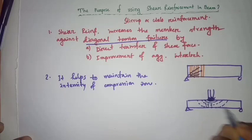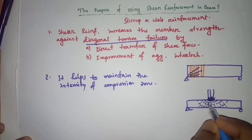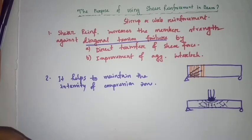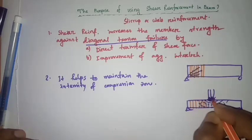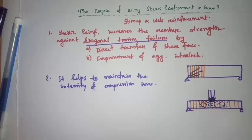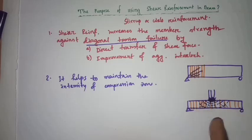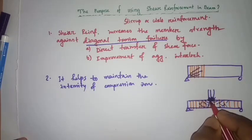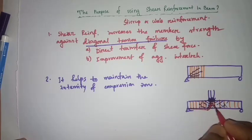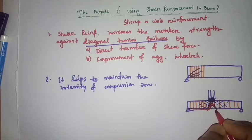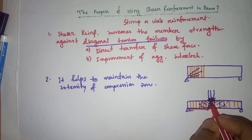Due to this wave, cracks will be developed in the beam. If we establish shear reinforcement — that is, stirrups — this cracking can be prevented. The stirrup acts as a precaution against this kind of crack. The severe crack that develops under maximum bending force is called a flexural crack, and it occurs in the compression zone, which is why we provide shear reinforcement.